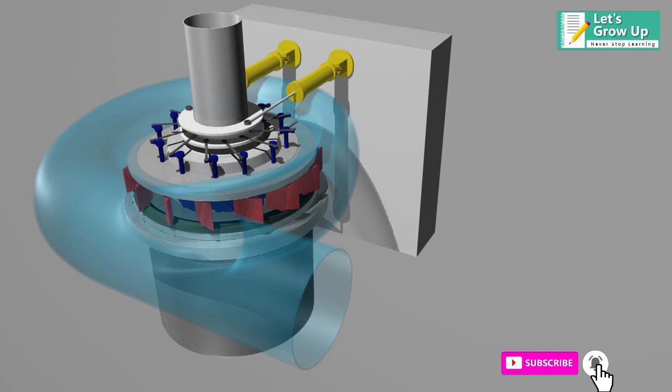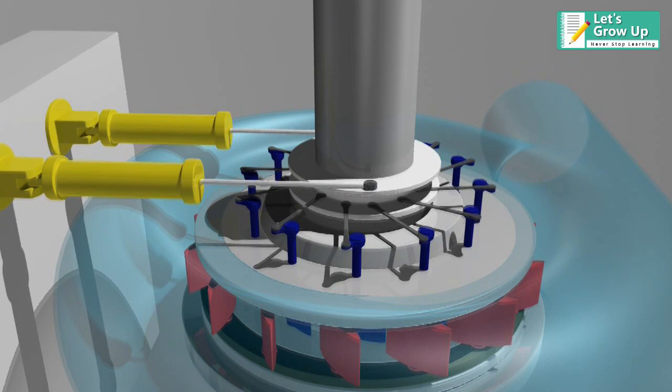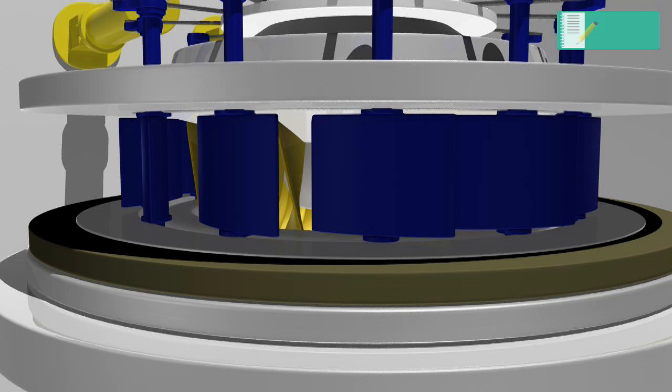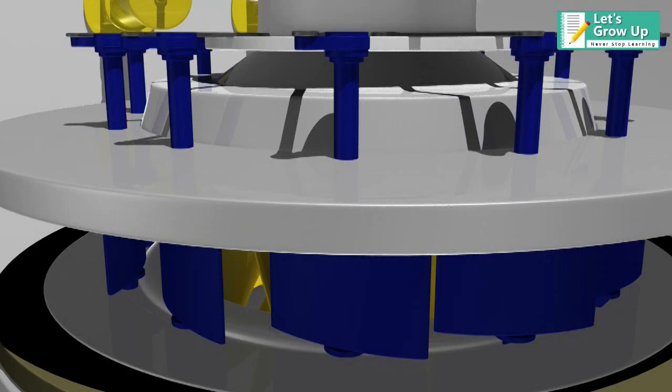It is an inward flow reaction turbine that combines radial and axial flow concepts. Francis Turbines are the most common water turbine in use today. Francis Turbine is a type of reaction turbine where the pressure is not remained same throughout the turbine.